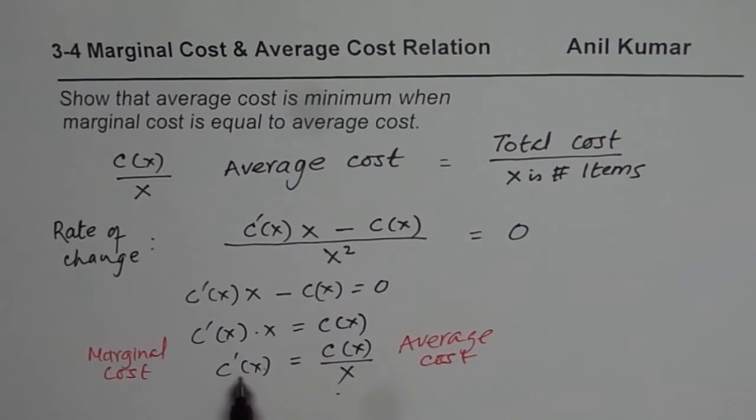So when marginal cost is equal to average cost, then we get the minimum value of the cost, the average cost. This is how we can show that it is true.